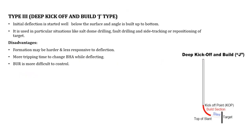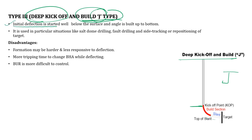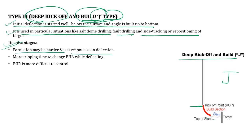Type 3 is the deep kickoff and build, commonly termed as J-type well. Here the kickoff point is very deep, then a build section followed by a slant section. Initial deflection is started well below the surface and an angle is built up to the bottom. It is used in particular situations like salt dome drilling, fault drilling, and sidetracking or repositioning of the target. Disadvantages are that the formation may be harder and less responsive to deflection, more tripping time is needed to change the bottom hole assembly while deflecting, and the buildup rate is more difficult to control.